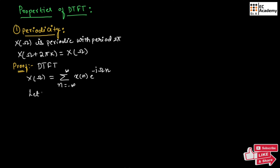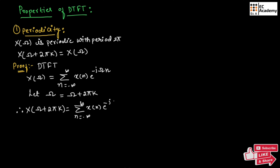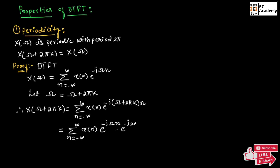Let us put omega equal to omega plus 2 pi k in the above equation. Therefore, we can write X of omega plus 2 pi k is equal to summation of n from minus infinity to infinity of x of n exponential to the power of minus j times (omega plus 2 pi k) times n. We can split this exponential term and write it as exponential to the power of minus j omega n into exponential to the power of minus j 2 pi k n.